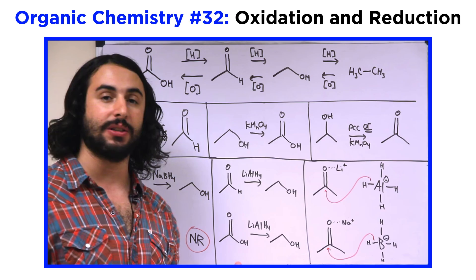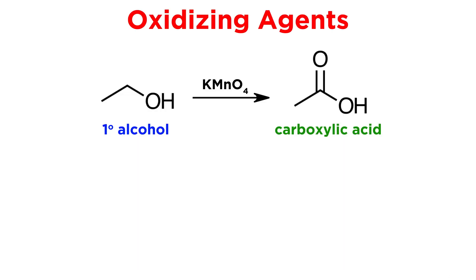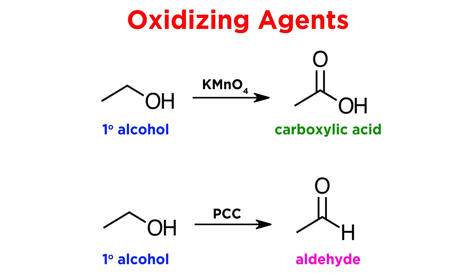Earlier in this series we looked at a variety of oxidizing and reducing agents. We learned how to oxidize alcohols all the way up to carboxylic acids, but we also learned about softer oxidizing agents like PCC, which oxidizes a primary alcohol only up to the aldehyde.